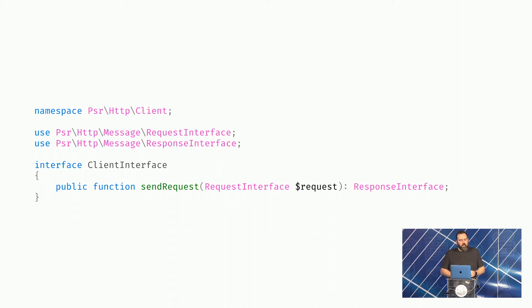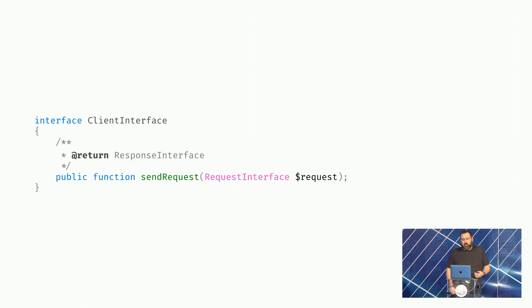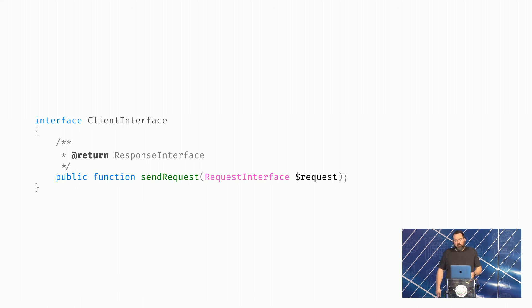Finally, just over a year ago, PSR-18 came to be — this turned out to be the HTTP client. So after all those years, what we ended up with was: interface ClientInterface, send request, takes a RequestInterface, and returns a ResponseInterface. And if we look at the original implementation from the first pass at creating the client, it's actually pretty close to what we had. It just took six years to get there.